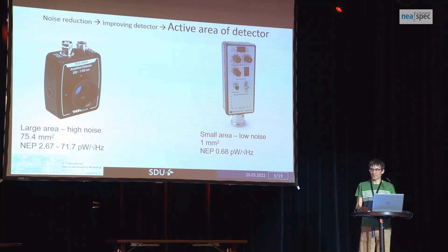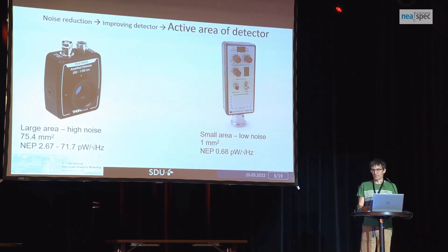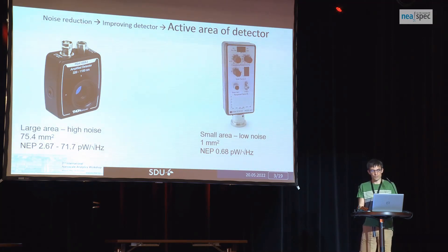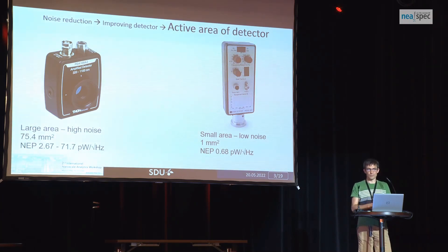I want to mention that the Neospec system is a very unique and nice system in that it works the first day after installation, but at the same time you can modify it on your own. If you know what's going on, you can change it and do a lot of interesting stuff. One of such things is the detector which you use. Of course, when you buy a system you buy a detector, and you can ask Neospec what detector is the best. But at a certain point you might think: maybe I can use my own detector, or improve detection by changing the detector.